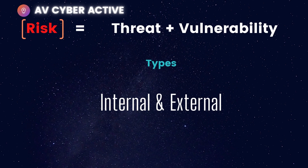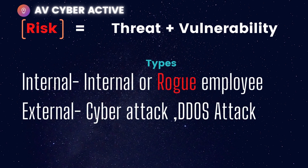Internal cyber risk comes from insiders — an insider threat. These insiders could have malicious intent or simply not be properly trained. External cyber risk comes from outside your organization, such as cyber attacks, DDoS attacks, phishing, and ransomware attacks.